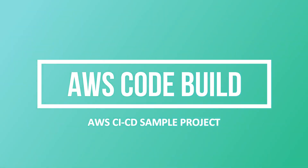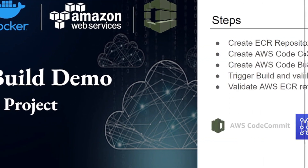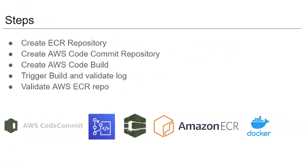Welcome back to this session. In this session we are going to understand the CodeBuild demo — an AWS CI/CD project to deploy a Docker image to an ECR repository. We are going to cover ECR repository creation, AWS CodeCommit repository creation where we keep our code, and then the build part. The small project will build a Docker image and push it to the ECR repository.